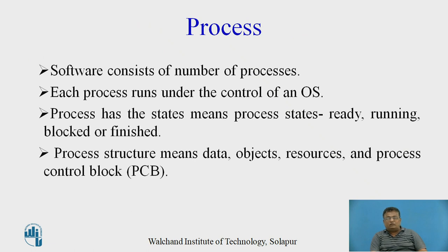Now we will see what a process is. Any software consists of a number of processes. The process is the sub-module or sub-program of any software, and each process runs under the control of an operating system. These processes have different states: the ready state, running state, blocked or finished state, and any process is in one of these states at any time. A process also has its own structure called the process structure, which consists of data associated with the process, different objects, different resources, and the process control block.